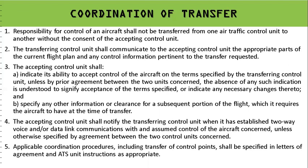The accepting control unit shall indicate its ability to accept control of the aircraft on the terms specified by the transferring control unit. For instance, the transferring unit may apply the Mach number technique to separate two aircraft, specifying a particular rate of flying or a waypoint to cross at or before or after a given time. The accepting control unit will check traffic in its area, and if feasible, it will accept the conditions already specified. Otherwise, the accepting control unit shall specify other clearances for the subsequent portion of the flight which it requires the aircraft to have at the time of transfer.